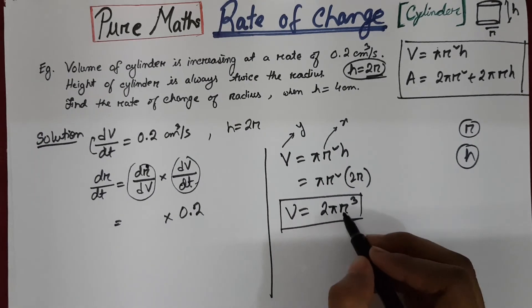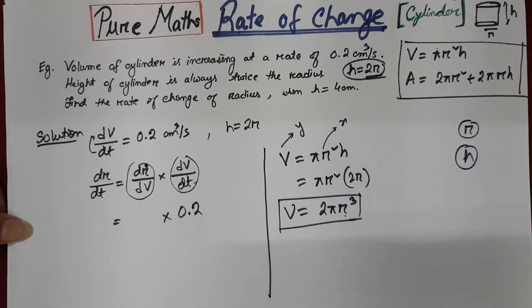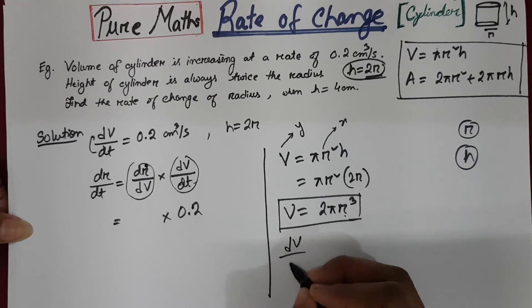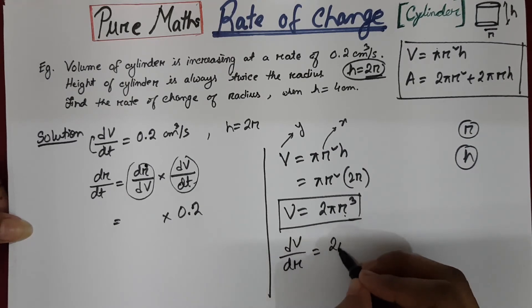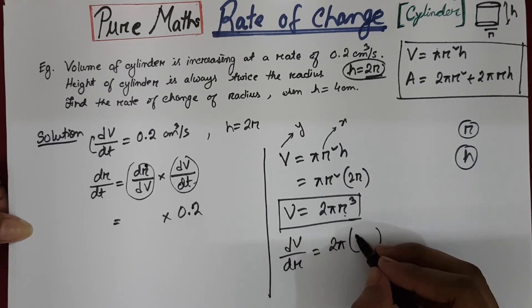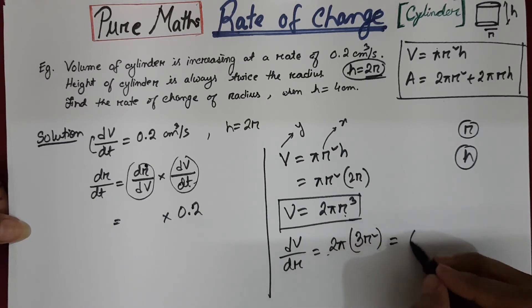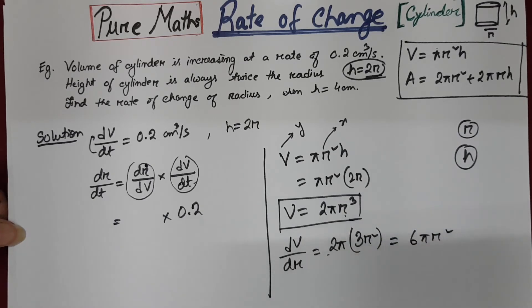So now the volume is your y and radius is your x. So dv by dr. So 2 pi will stay here and r cube will become 3r square. So the differentiation is 6 pi r square.